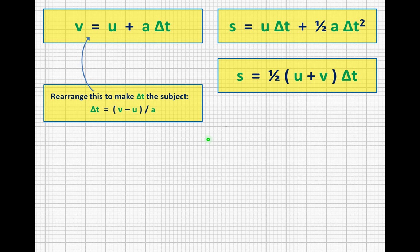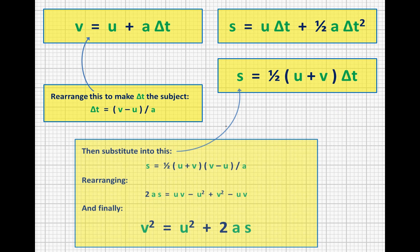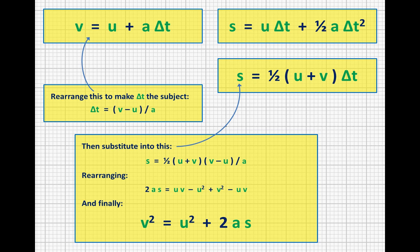And if we take that expression for delta t and pop it in here, we've got an expression for s in terms of u, v, and a, but no t. So it's a little bit complicated looking, but we can simplify that down. We can multiply both sides by 2 to get rid of a half, and multiply both sides by a to get rid of the divide by a there. And we end up with 2as on this side.